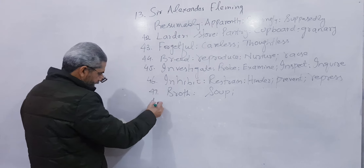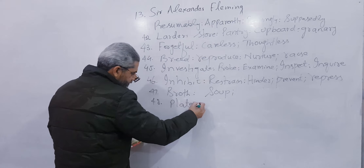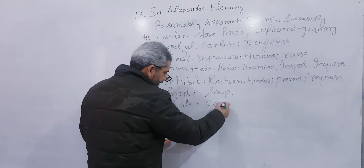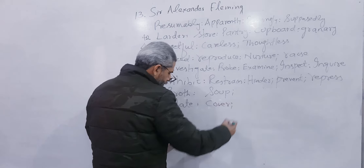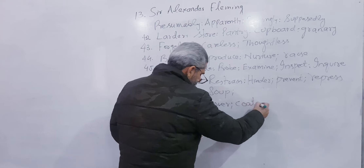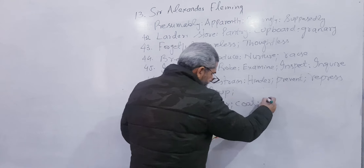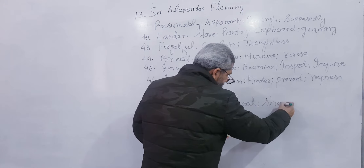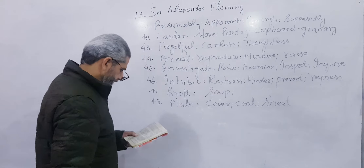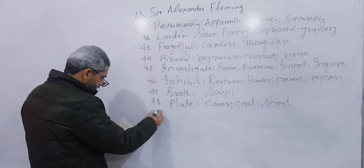Next, number 48: Plate. As a verb, plate means to cover, coat, or sheet something — to put a covering of another material over it.